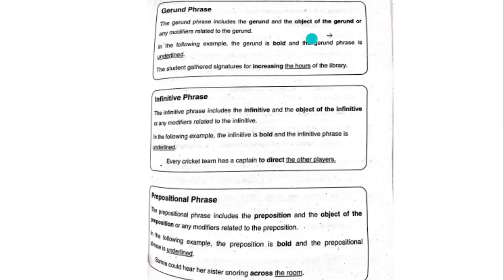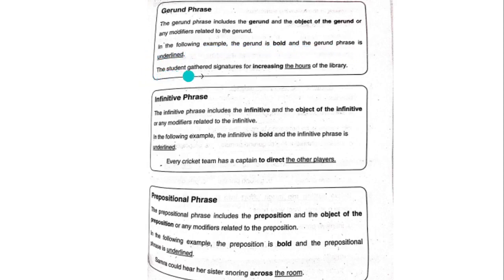Gerund phrase. A gerund phrase includes the gerund and the object of the gerund or any modifiers related to the gerund. In the following example, the gerund is bold and the gerund phrase is underlined. Example: 'The student gathered signatures for increasing the hours of the library.'